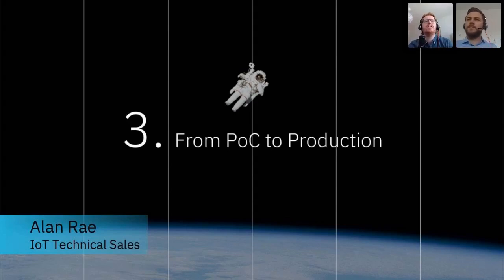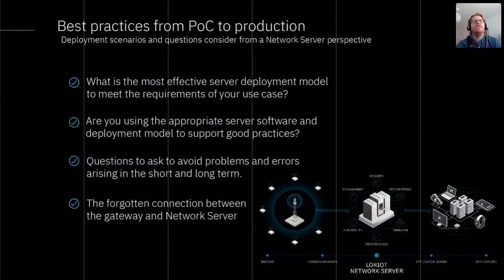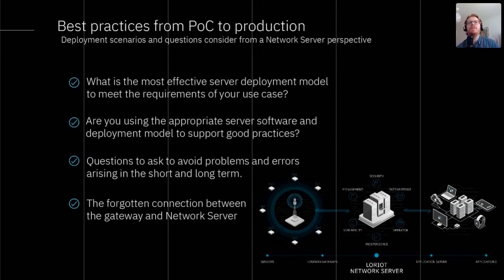In this section, I'd like to focus on best practices and steps to take when moving from POC to production. Generally, we have our gateways and devices ready to deploy, and our application is ready to start ingesting data — but what about arguably the most critical component in a LoRaWAN network: the network server? I want to focus on the most important server deployment models to meet requirements and ensure we're using the appropriate server deployment for good practices.